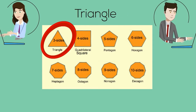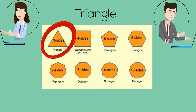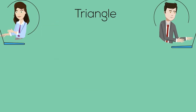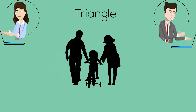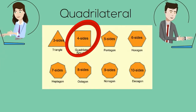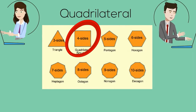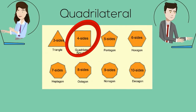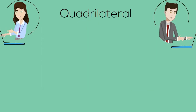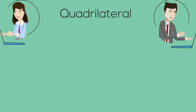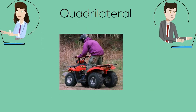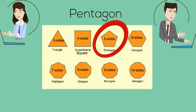First up is a triangle. A triangle has three sides, so I think of a tricycle with three wheels. A quadrilateral has four sides, so I think of a quad vehicle riding down the trails.